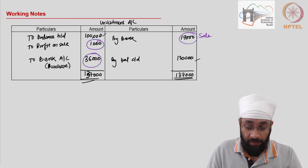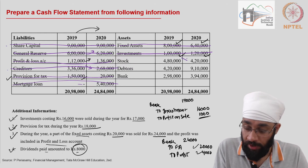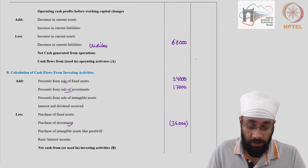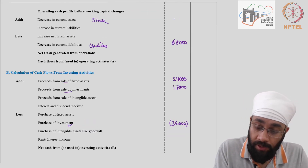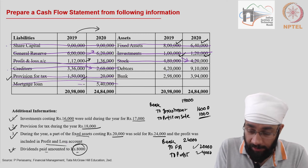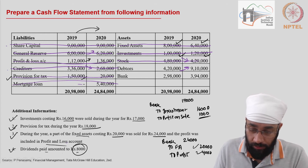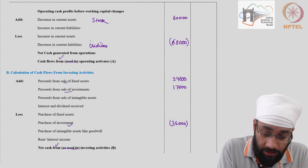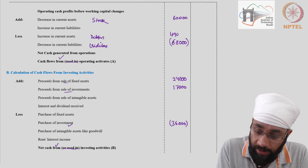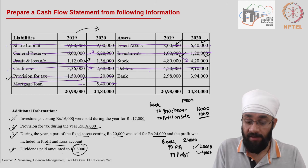Back to the balance sheet for current assets. Stock is going down — a decrease in current asset is an inflow — so stock decrease of 60,000 is an inflow. Debtors are going up by 4,90,000 — an increase in debtors of 4,90,000 is an outflow.